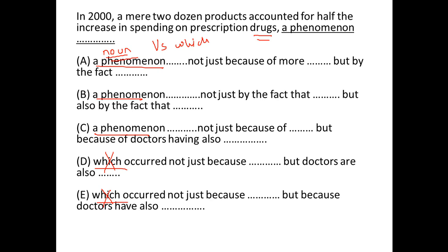Now if you look at A, B, and C, it says NOT JUST BUT. This is an inclusive construction where it should be NOT JUST X BUT ALSO Y. NOT JUST must be followed by BUT ALSO, and the word after NOT JUST must be parallel with the word after BUT ALSO. Here NOT JUST is there but we don't have BUT ALSO — the pair is not complete. Also, here X is 'BECAUSE OF' and Y is 'BY THE FACT' — again they are not parallel. Eliminate A.